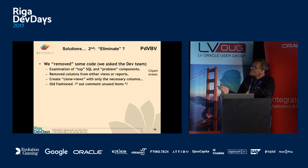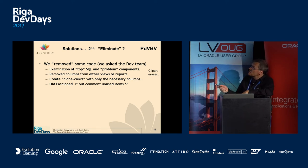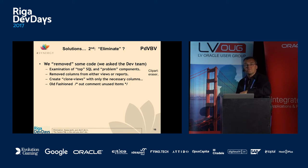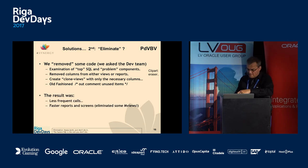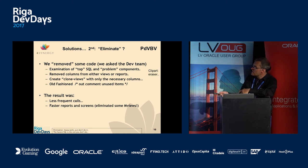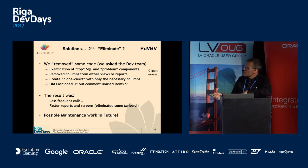One other solution: just don't run that code. We commented out a lot of code and the system started to run faster. This was an indication that if we eliminate function calls we get much better performance. We cloned views and commented out things we thought were no longer in use — the system ran faster. It helped us, and it was the perfect indicator that we had a real use case for function result cache.